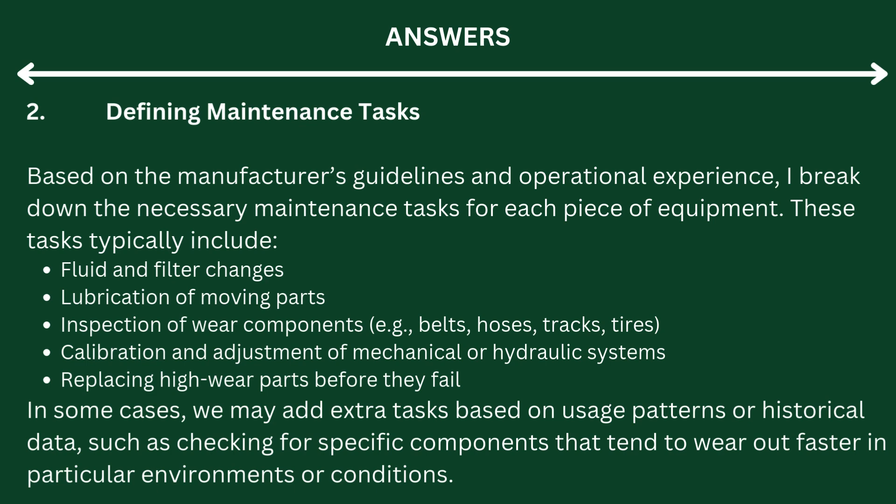Step 2: Defining Maintenance Tasks. Based on the manufacturer's guidelines and operational experience, I break down the necessary maintenance tasks for each piece of equipment. These tasks typically include fluid and filter changes, lubrication of moving parts, inspection of wear components (e.g., belts, hoses, tracks, tires), calibration and adjustment of mechanical or hydraulic systems, and replacing high-wear parts before they fail. In some cases, we may add extra tasks based on usage patterns or historical data, such as checking components that tend to wear out faster in particular environments.